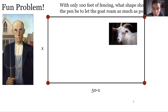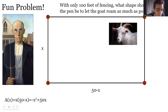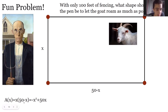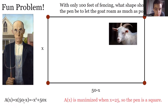The area is length times width: x times (50 minus x). If we expand this, we get negative x squared plus 50x, which is a quadratic. Because the coefficient of x squared is negative, the parabola opens downward, so there will be a maximum point — which confirms there is a maximum area.